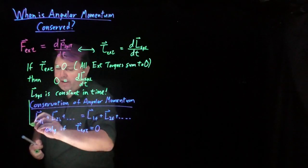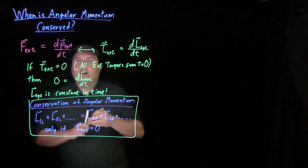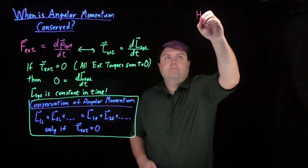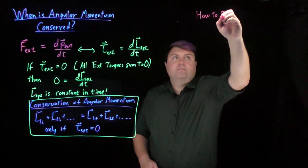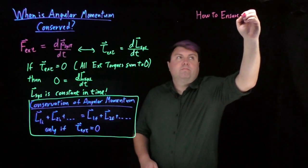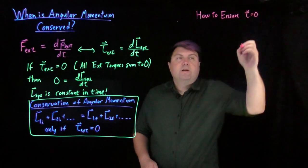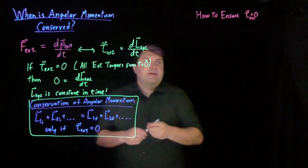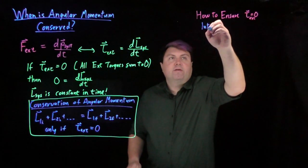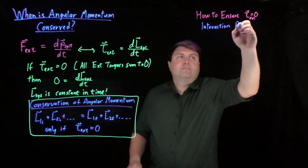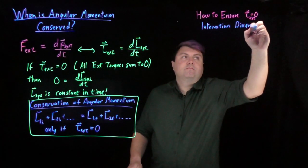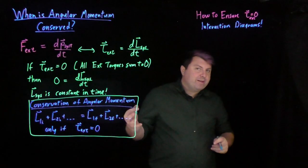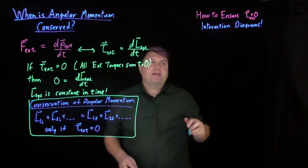So our next question is, how do we ensure that our torque external is zero? And the answer to that is interaction diagrams. Same thing that we do with energy, same thing we did with momentum, is the same thing we're going to do with angular momentum.